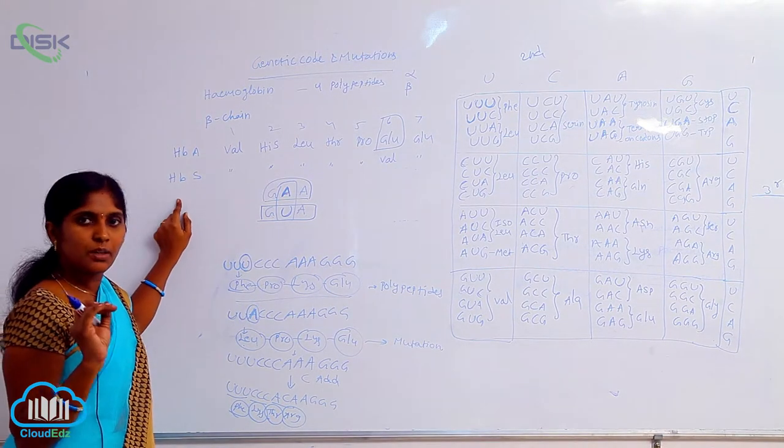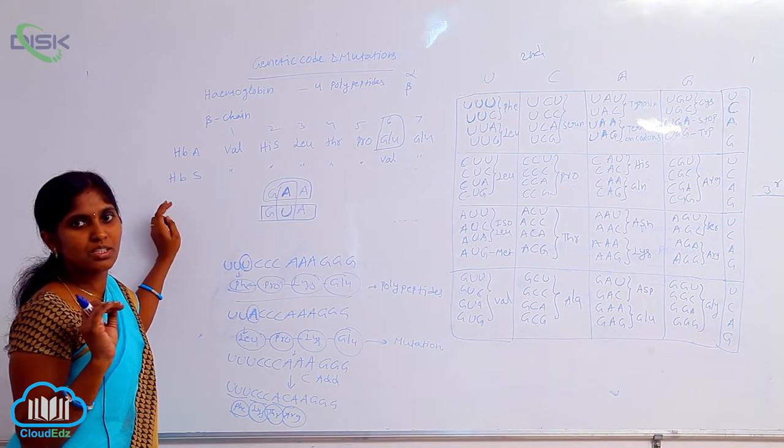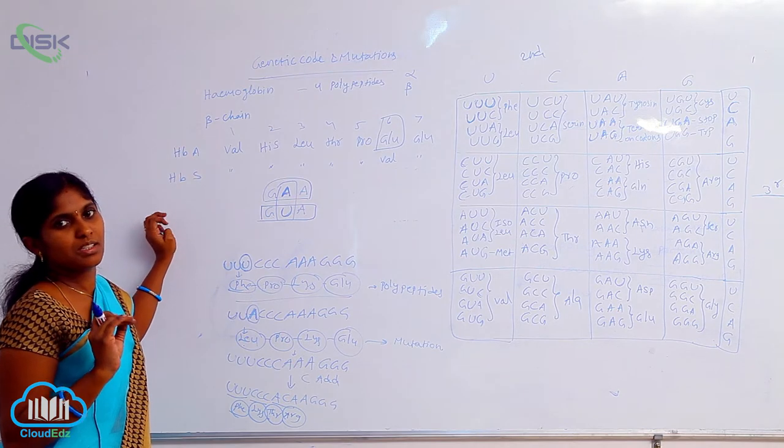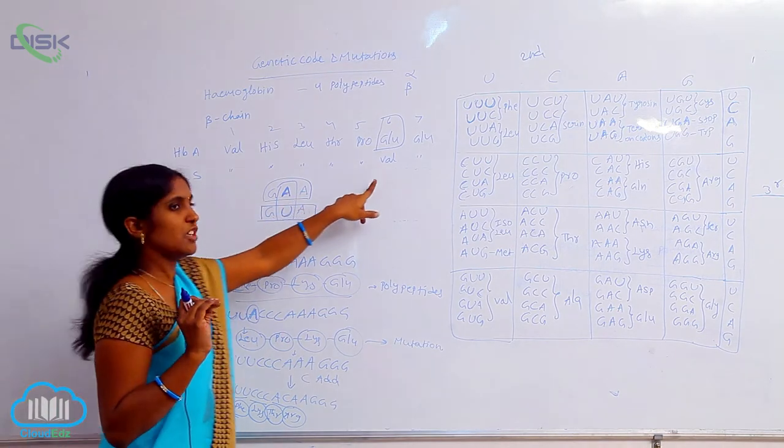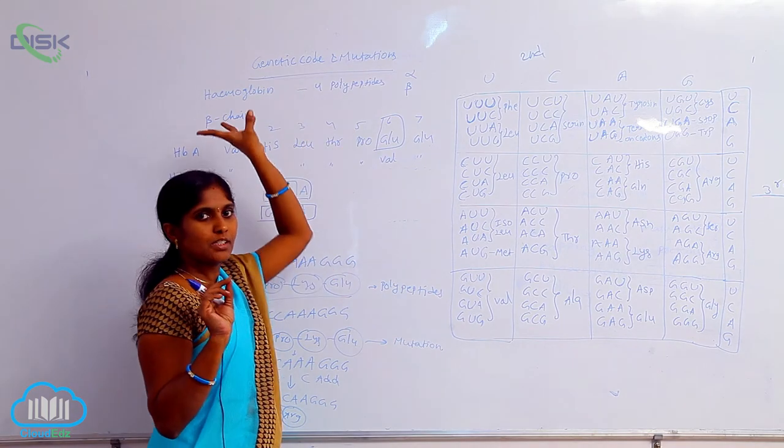At the sickle shape, they do not absorb oxygen efficiently. That leads to sickle cell anemia. Sickle cell anemia disease is caused due to the alteration of a single base pair - that is point mutation found in the genetic code.